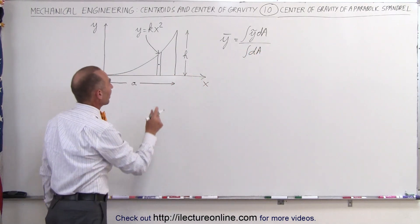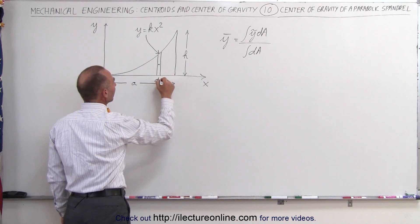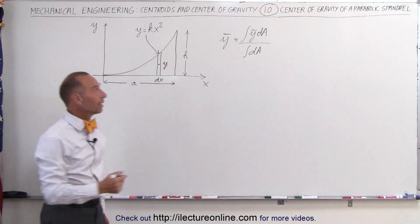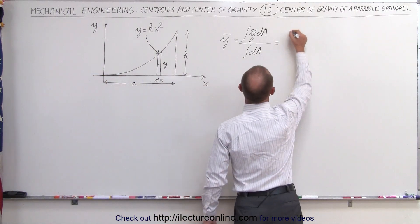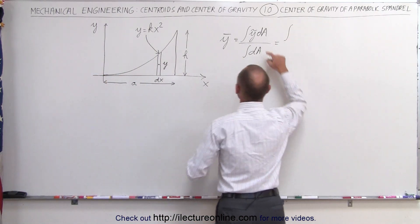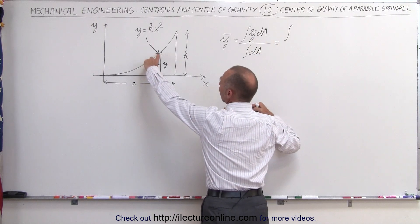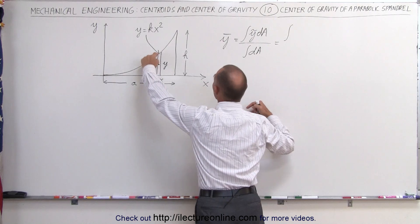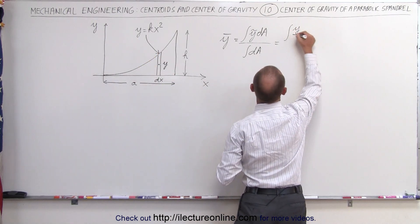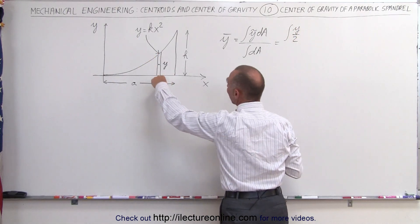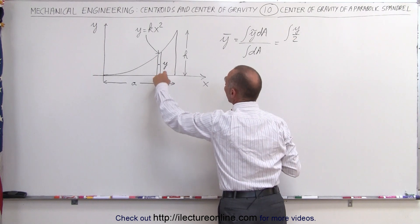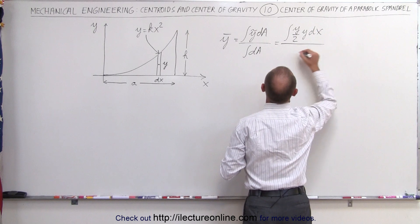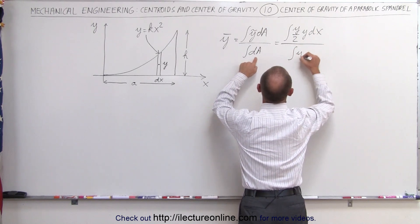Now, what is the dA in this case? The width here would be a little dx and the height would be y, so dA is actually y·dx. This becomes equal to the integral of — we can also find y-tilde, the center of mass of this little piece, which is halfway up the distance, which is y divided by 2, times dA. dA would be y times dx. Divide the whole thing by the integral of dA, which is y times dx.